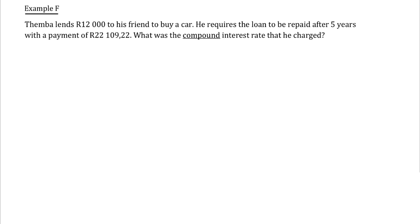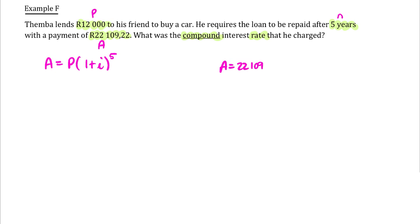Our last example: Timber lends 12,000 rand to his friend to buy a car. The loan happens at the beginning. He requires the loan to be repaid after five years with a payment of 22,109 rand and 22 cents. Your payment is the loan plus interest — that's your A value. What is the compound rate that he was charged? The accumulated amount is 22,109.22, the principal was 12,000 rand, the interest rate is what we want to find, and the time period is five years.